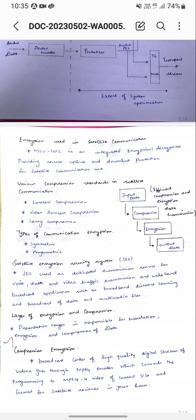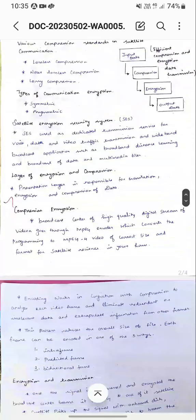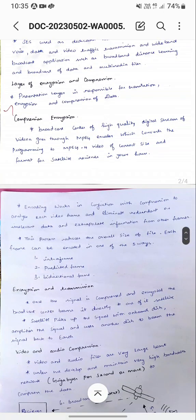The presentation layer is responsible for translation, encryption, and compression of data. The broadcast center of high quality digital stream and video goes through MPEG encoders, which convert the program to MPEG-4 video of the correct files and format for the satellite receiver environment. This process reduces the overall size of files.